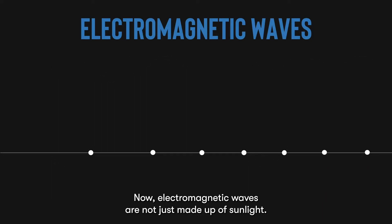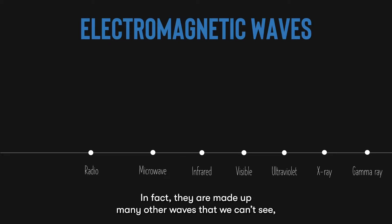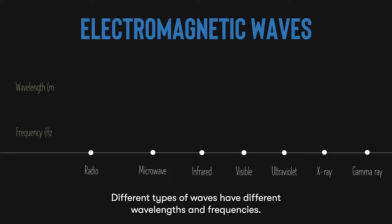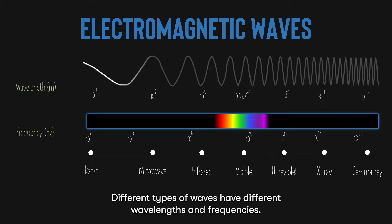Now, electromagnetic waves are not just made out of sunlight. In fact, they are made up of many other waves that we can't see, like radio waves, microwaves, x-rays and gamma rays. Different types of waves have different wavelengths and frequencies.